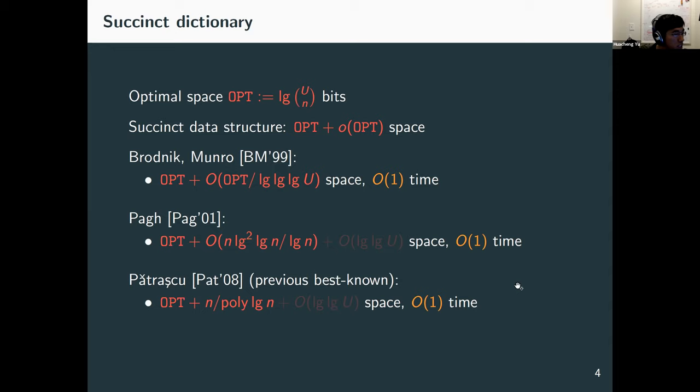I have one question — how bad is the relationship there? Like, say you have poly(log)^c, how bad would the query time be? It's O(c), so it's just proportional.